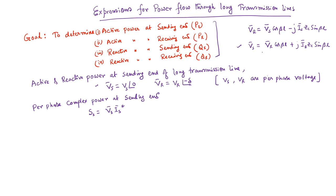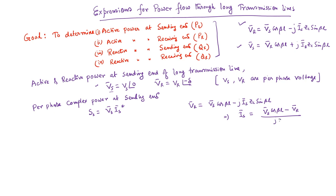Since VS = VS∠0°, we find IS from the relationship VR = VS·cos(βl) − j·IS·ZC·sin(βl). Rearranging, IS = [VS·cos(βl) − VR] / (j·ZC·sin(βl)). Substituting this into the complex power expression and taking its conjugate gives us the expression to evaluate.